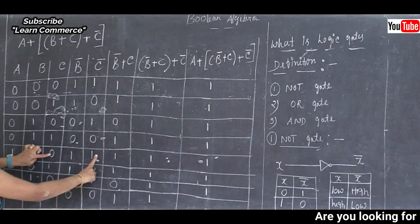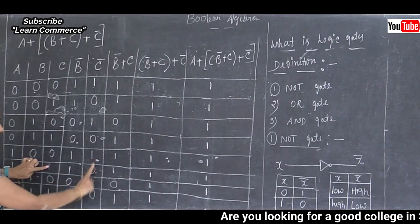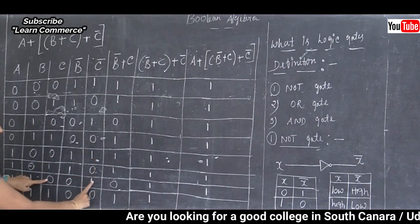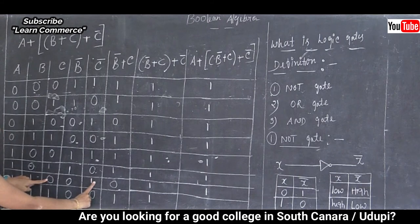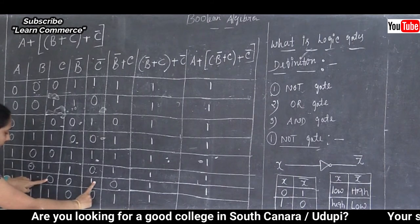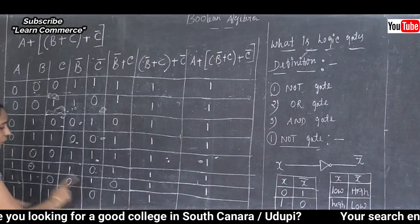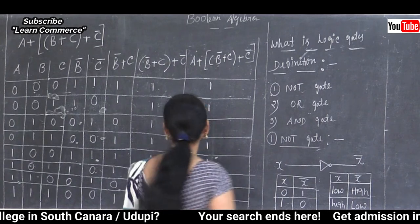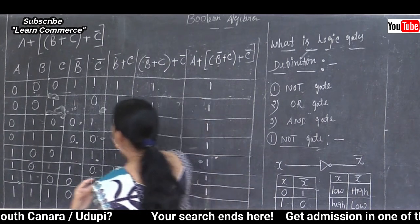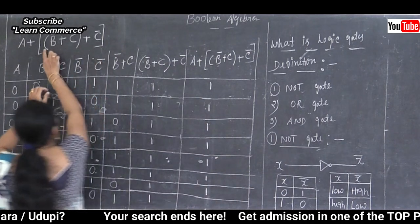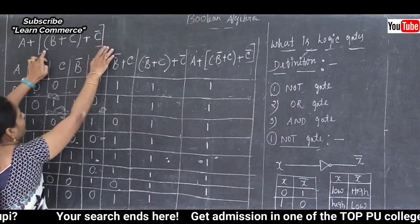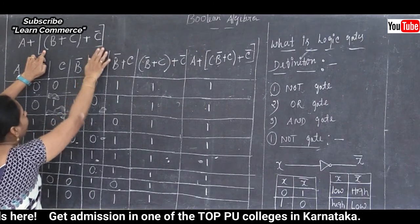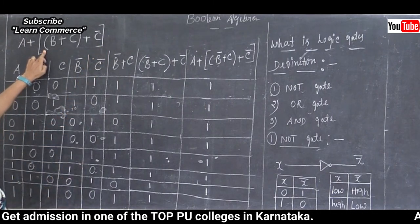So we need to change each value to its complement: 0 becomes 1, 1 becomes 0, and so on. Now we have completed the complementation for all values inside the parentheses expression.